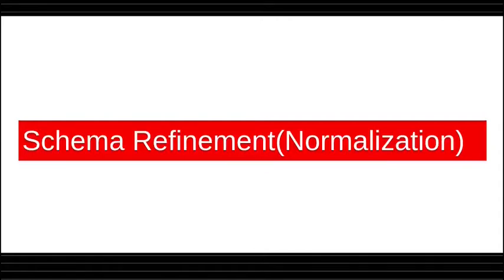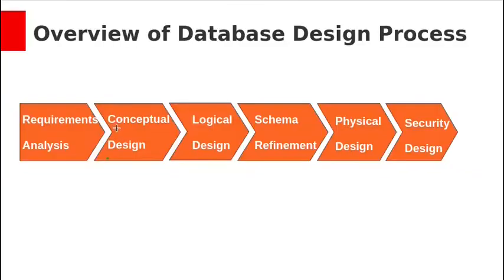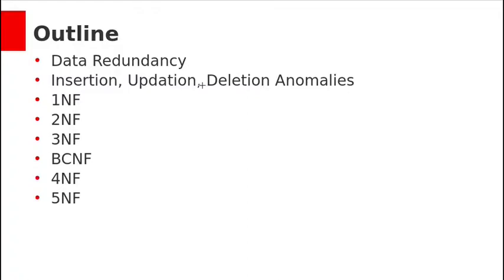In the previous class we covered relational algebra and SQL queries. Today we will start schema refinement, which is achieved using normalization. We are done with conceptual design, logical design, and physical database design. We will discuss data redundancy and its problems, then cover all the normal forms: 1NF, 2NF, 3NF, BCNF, 4NF, and 5NF.